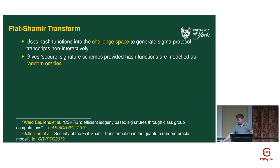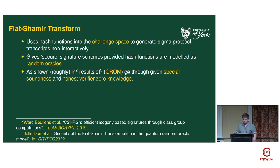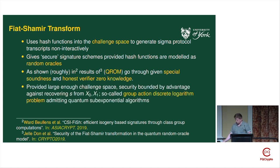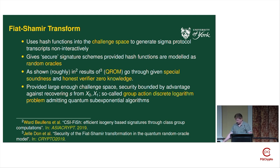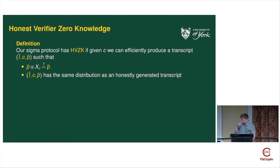You get secure signature schemes in the quantum random oracle model, as CSi-Fish showed, with respect to free transitive group actions. The results of Döring et al. go through in the quantum random oracle model provided you have two properties: special soundness and honest verifier zero knowledge. These sigma protocols are set up by definition to give special soundness, so the one that gives us trouble is honest verifier zero knowledge. The security is based on what I'm calling the group action discrete logarithm problem — also called the vectorization problem — which admits quantum sub-exponential algorithms; it's basically the dihedral hidden subgroup problem.